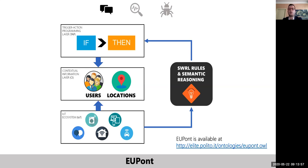EUPont is able to map abstract rules in the trigger-action programming layer to real devices and services able to reproduce the desired behaviors. Such mapping is performed by reasoning on the IoT ecosystem layer and shared contextual information. To do this automatically, we use a set of SWRL rules. SWRL is a language of the semantic web that can be used to dynamically add knowledge to the ontology based on the evaluation of semantic rules.